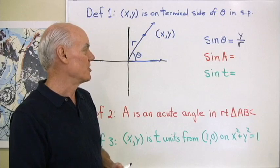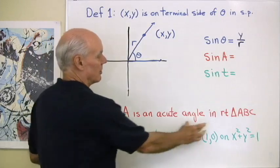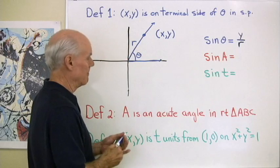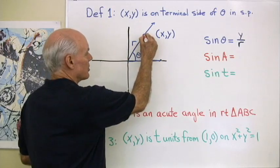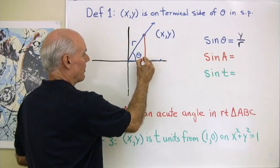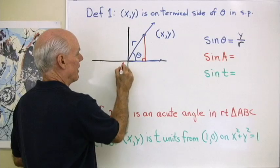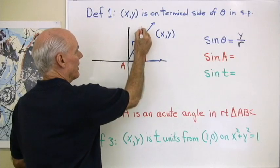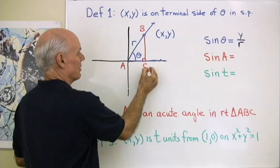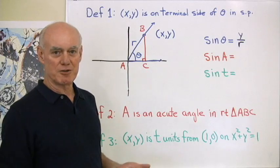How about our second definition where A is an acute angle in right triangle ABC. So what I'm going to do is this. I'm just going to use this as my right triangle. I'll call this now angle A right here. That would be angle B and that's angle C. So there I have a right triangle.